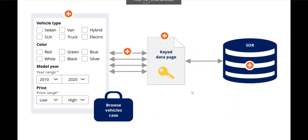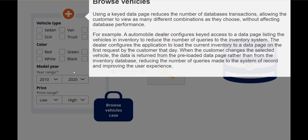If you see the keyed data page, this is the overall structure. This is a case type where the user will select various details. Using a keyed data page reduces the number of database transactions, allowing the customer to view as many different combinations as they choose without affecting database performance.